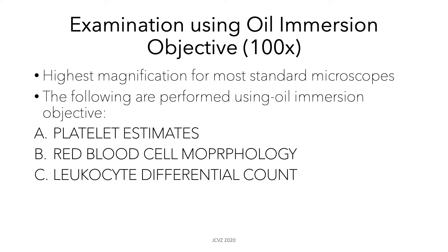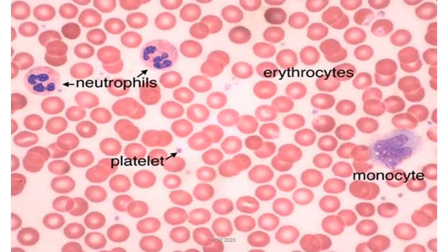Using the oil immersion objective, or 100x magnification — the highest magnification in most standard microscopes — the following procedures are performed: platelet estimates, examination of red blood cell morphology, and leukocyte or differential counts. Here you can see the different types of blood cells under the oil objective: neutrophils, which are the segmented cells on the upper left; a monocyte with a kidney-shaped nucleus; platelets, which are small purple cell-like structures; and erythrocytes with their signature salmon pink color and central pallor.